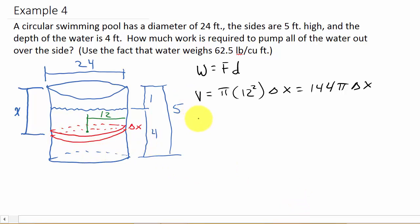So the force, the force is the pounds per cubic foot, the 62.5 times the volume. So the volume is 144 pi times delta x. So for the force we get, when we multiply this, we get 9000 pi times delta x. So there's our force.